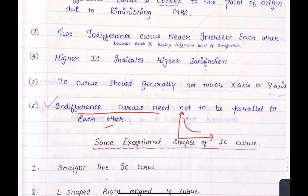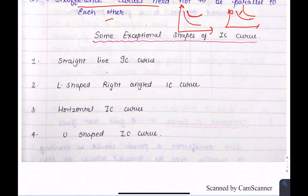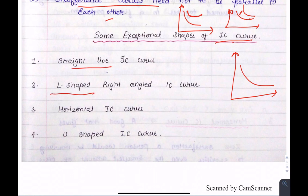It is not necessary that indifference curves are parallel — one IC curve can have a different shape compared to another. The IC curve is generally downward sloping, but there are some exceptional shapes of the IC curve: it can be a straight line, L-shaped, horizontal, or U-shaped.